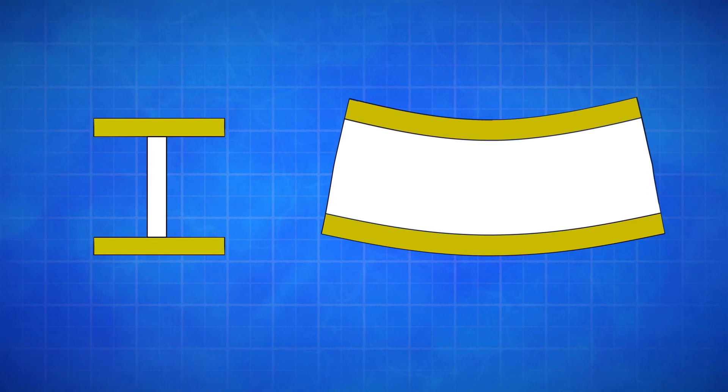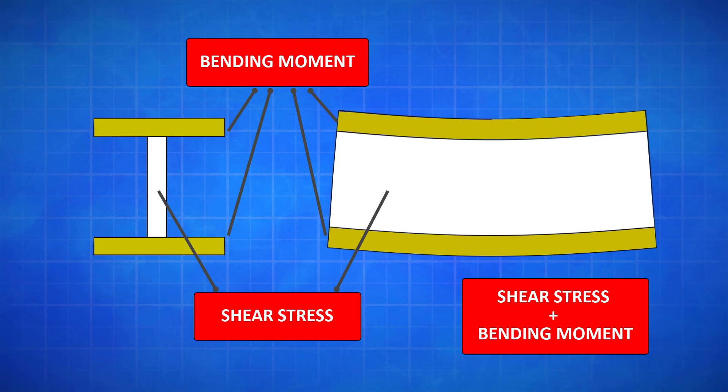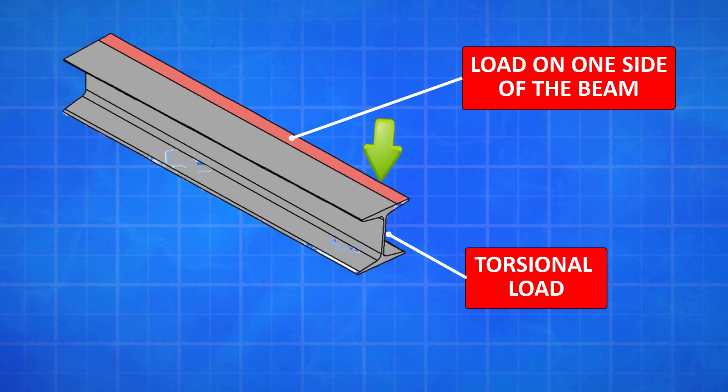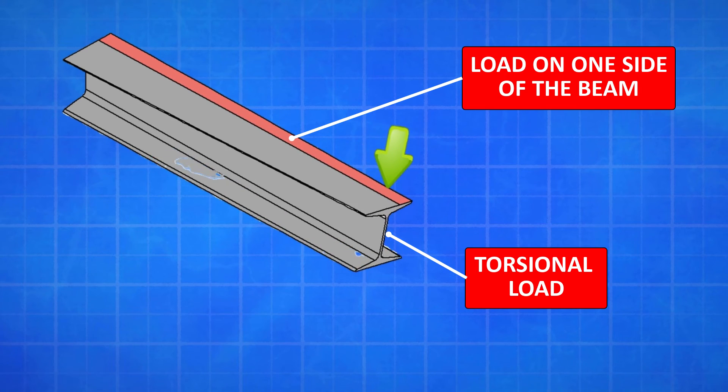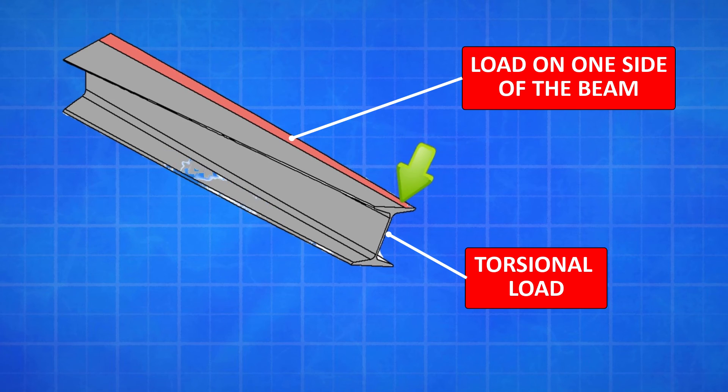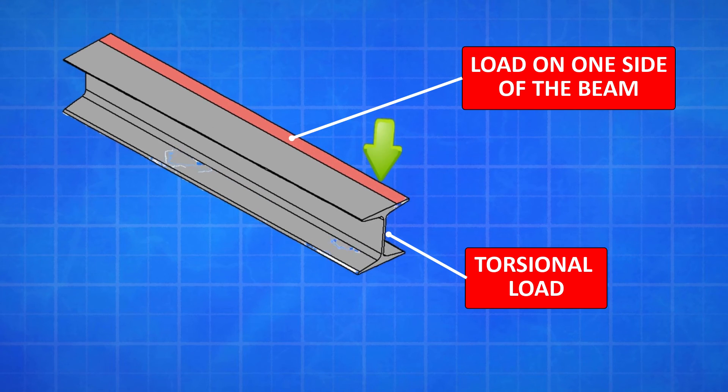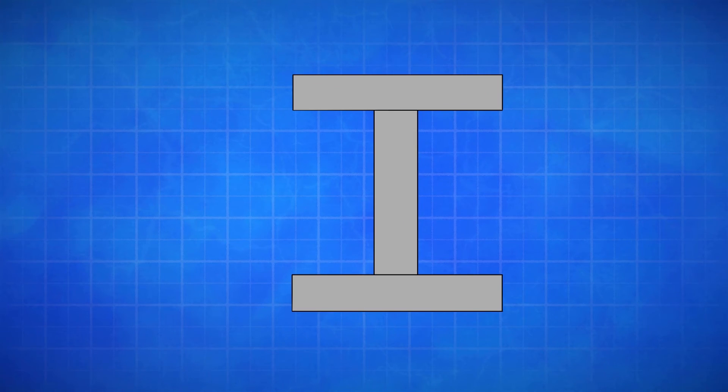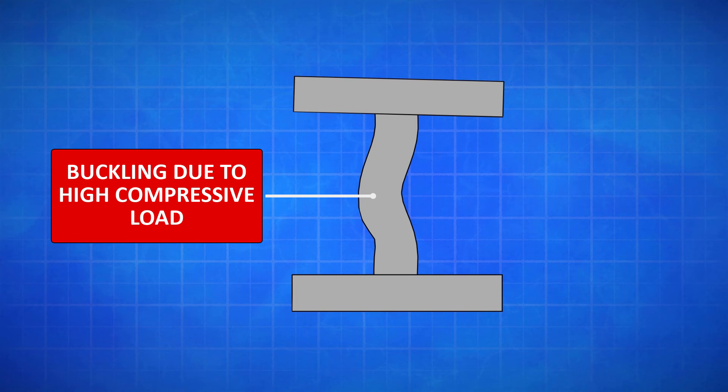It is important to note that while the beam is excellent for handling bending and shear stresses, it is not well equipped to handle torsion loads. When a load is acting offset from the neutral axis as seen in this example where the load is applied to one side of the beam, the I-Beam struggles to handle the torsion load. And a beam is also subjected to buckling if the beam reaches its critical load due to high compressive load, as you can see in this animation.